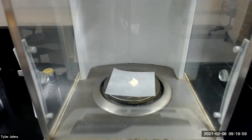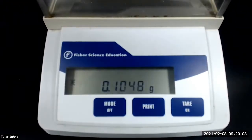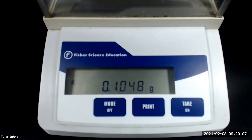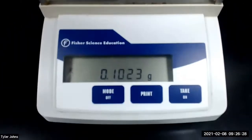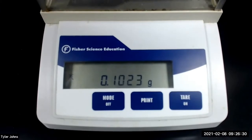The mass of benzyl that we will be using is 0.1048 grams, and the mass of dibenzyl ketone that we will be using is 0.1023 grams.